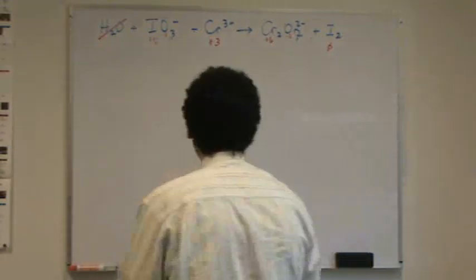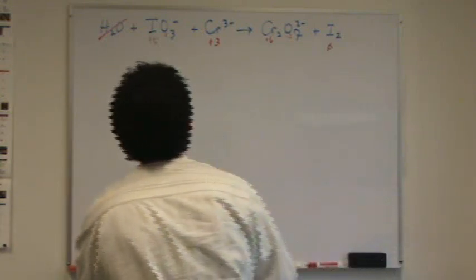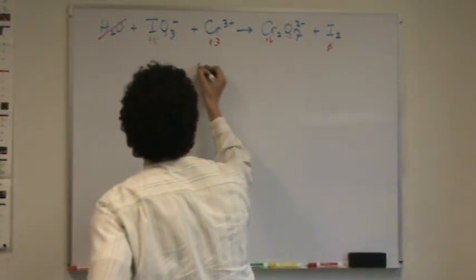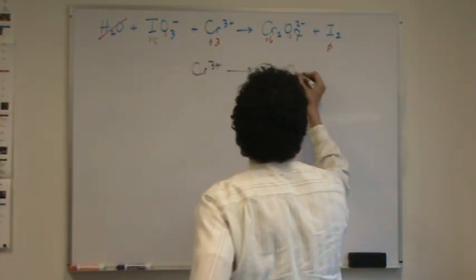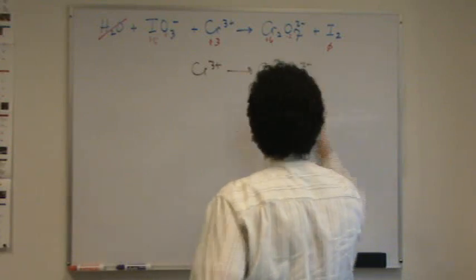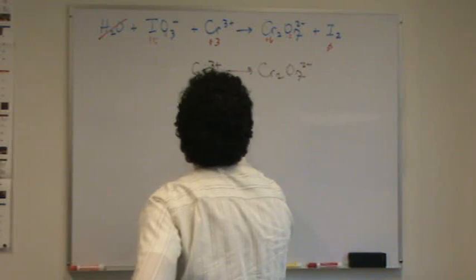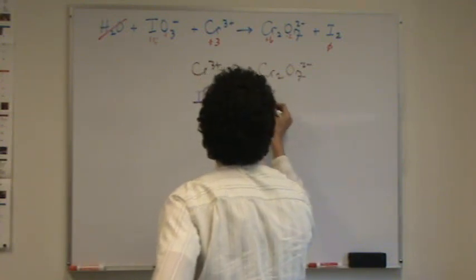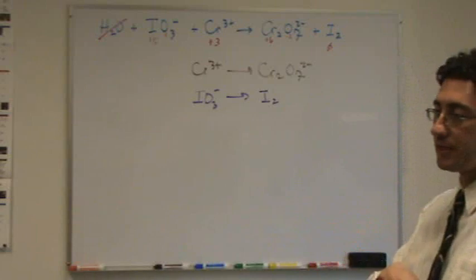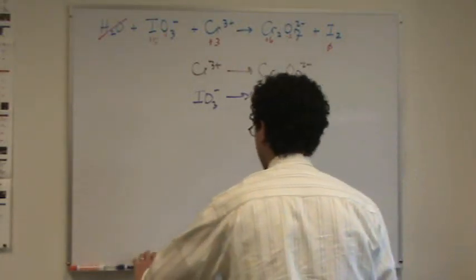So, now let's split them up into half reactions. And, go from there. Well, we've got, in one case, chromium 3 plus goes to chromium 2 O7 2 minus. And then, in the other case, we've got IO3 minus goes to I2. And, we'll try to balance this both in acidic and basic conditions. Okay? So, we'll try both so you can see how it works.